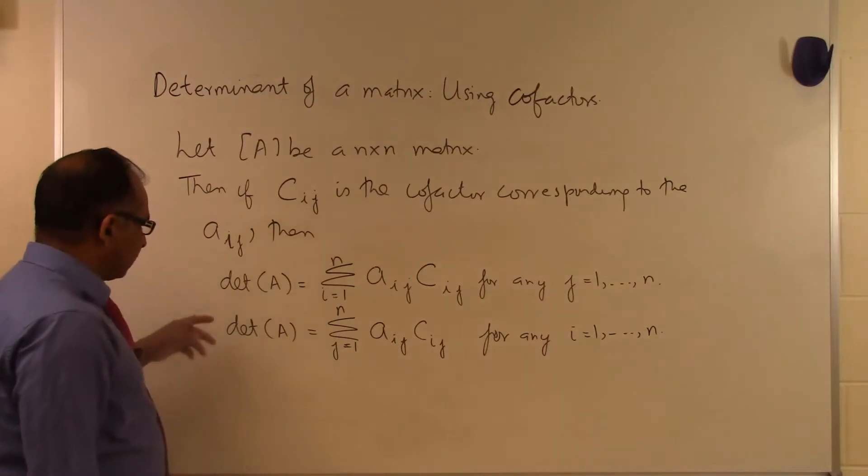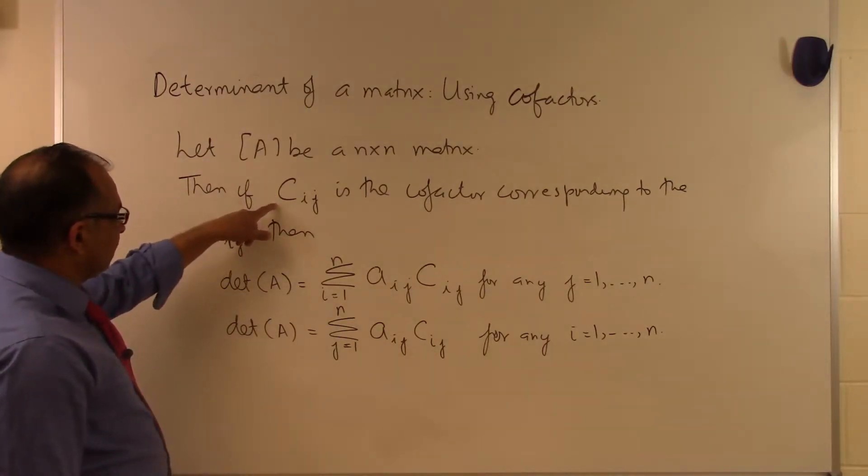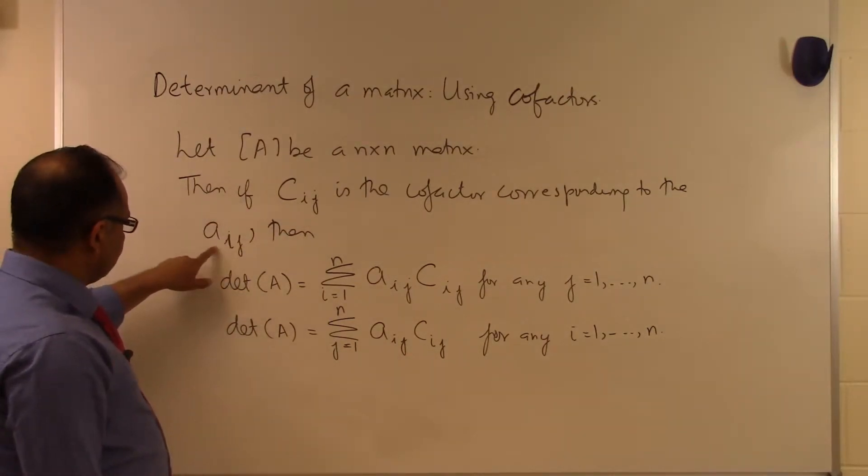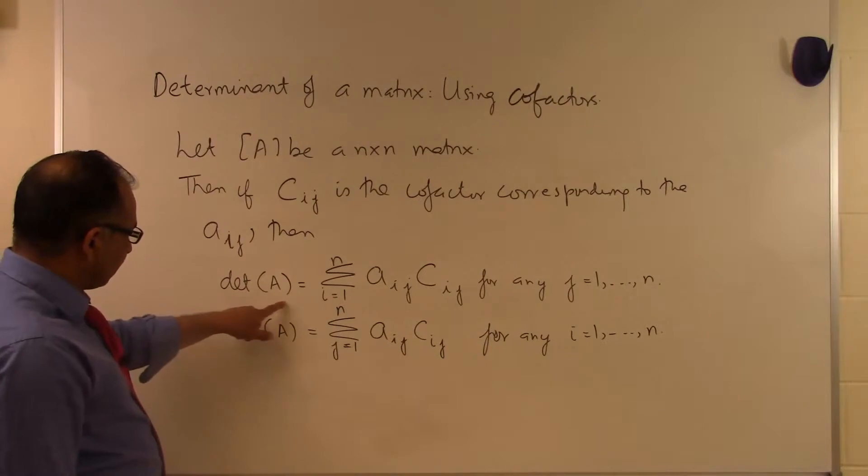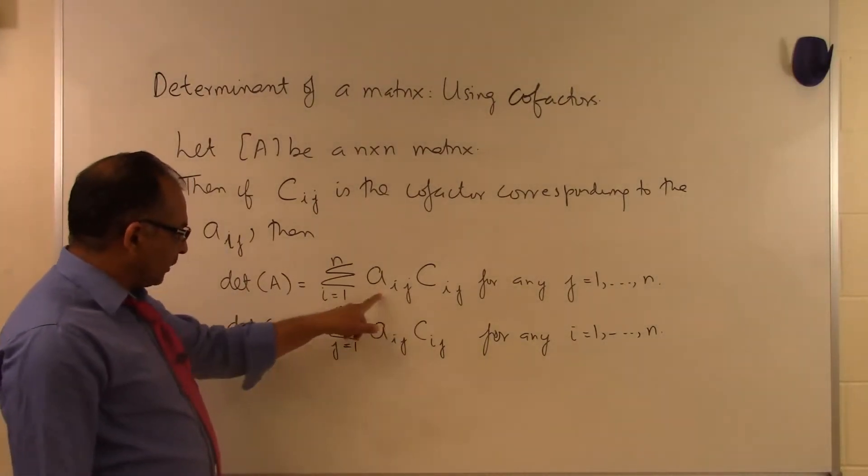So what this means is that we have to be able to find the cofactor corresponding to the elements of the matrix, not each element, but corresponding to some elements of the A matrix as will be evident from this formula. We can find the determinant of A by doing this summation.